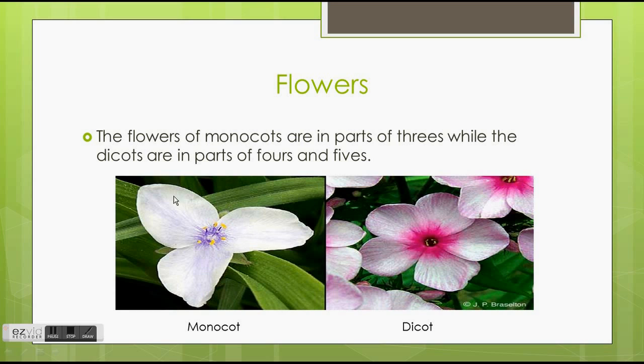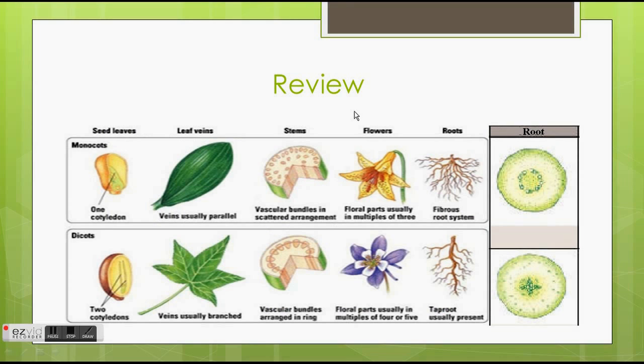And on the right, we see the dicot flower, which has five, and it's usually found in tens or eights.